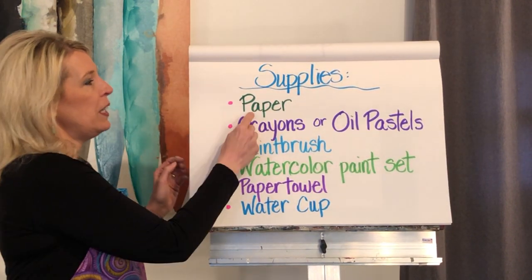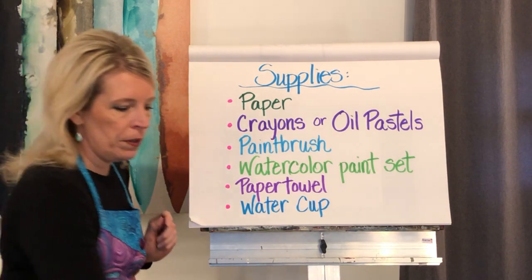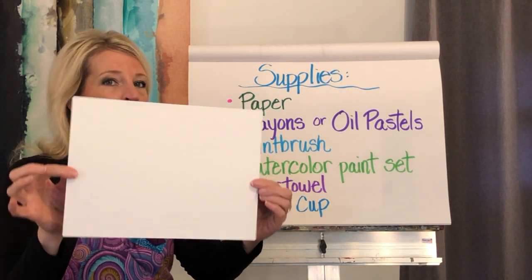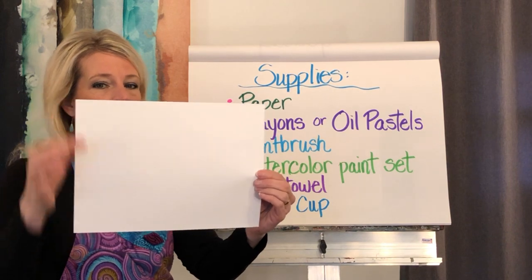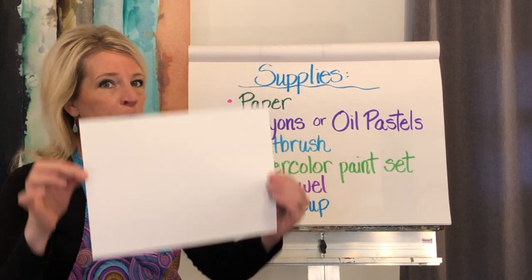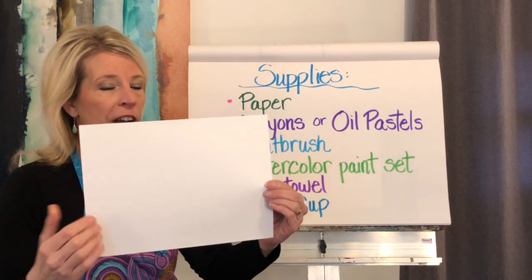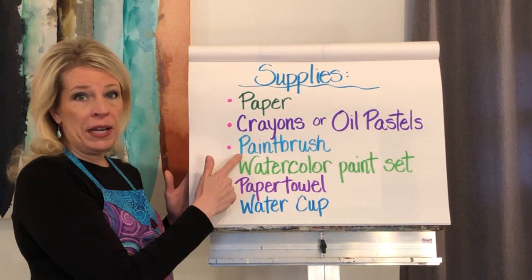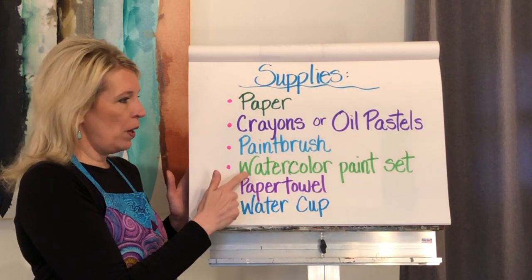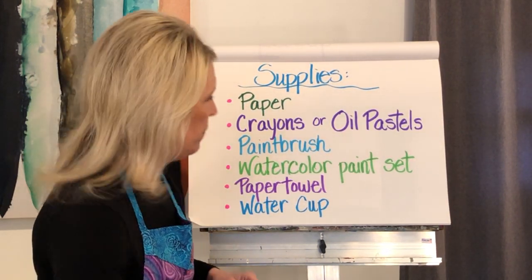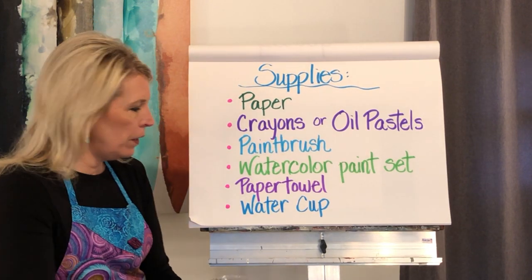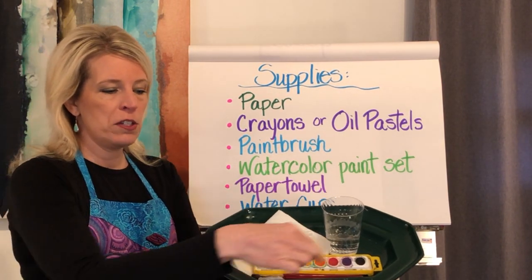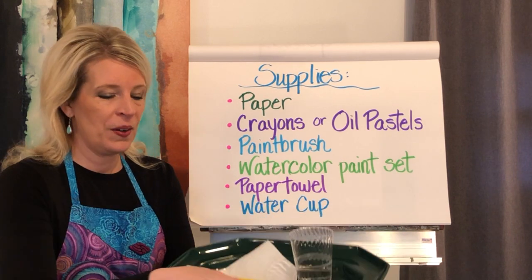Today what we'll need is some paper — any size will do. I will be using my paper horizontally, what we referred to last week as hamburger — short and fat. And crayons or oil pastels, a paintbrush, a watercolor paint set, paper towel, and a water cup so that you have all of your supplies set up and ready to go.